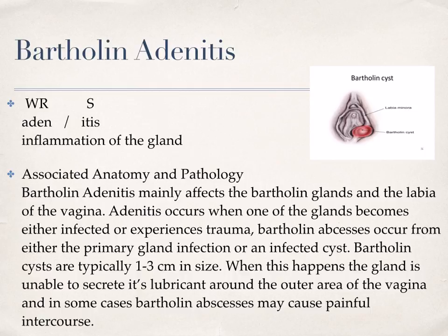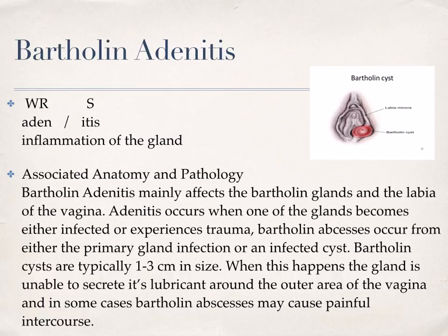Our next condition is Bartholin adenitis, comprised of a word root and a suffix, which means inflammation of the gland. Bartholin adenitis mainly affects the Bartholin glands of the labia and the vagina. Adenitis occurs when one of the glands becomes either infected or experiences trauma. Bartholin abscesses occur from either the primary gland infection or an infected cyst. Bartholin cysts are usually 1–3 cm in size. When this happens, the gland is unable to secrete its lubricant around the outer area of the vagina, and in some cases Bartholin abscesses may cause painful intercourse.